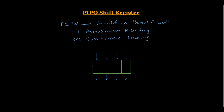In synchronous loading, when we apply the clock pulse, then our input data will be simultaneously stored into the shift register. Here we have a 4-bit shift register, and all the flip-flops are connected to each other. We apply input data x3, x2, x1, and x0. This is flip-flop number 3, flip-flop number 2, 1, and 0 — a 4-bit shift register.